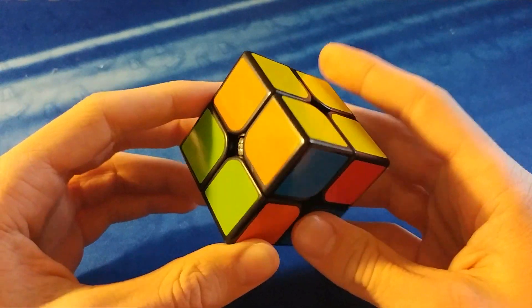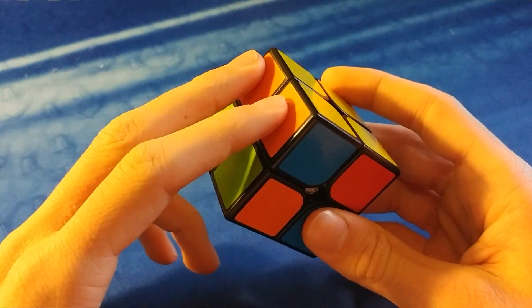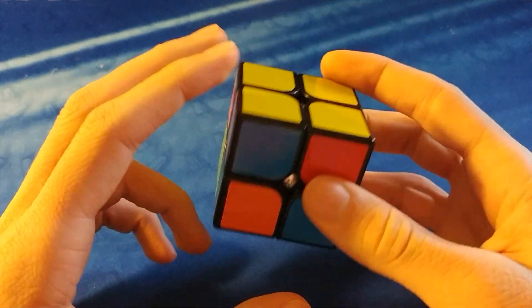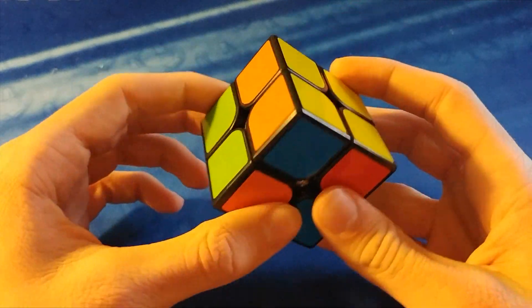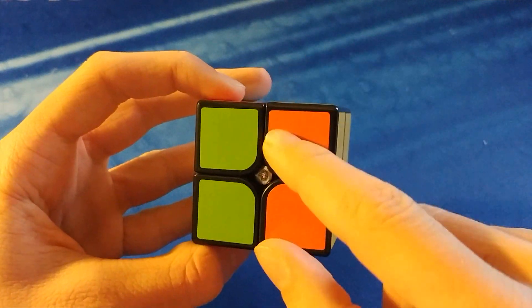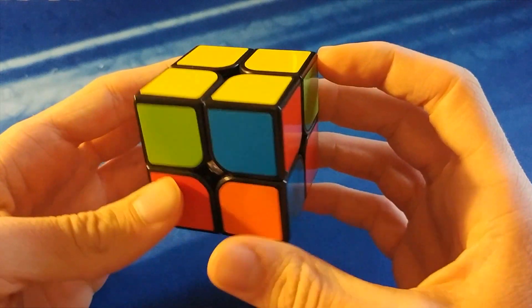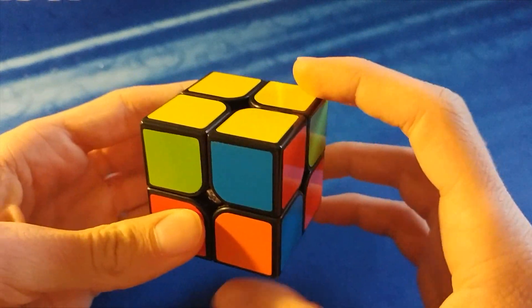Okay, so the first case is we have two paired up on the top and two paired up on the bottom, so you're going to place them so that they're both on the same side and they're on the back, and you're going to do this algorithm.